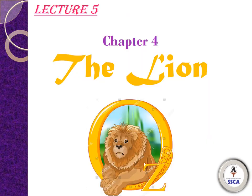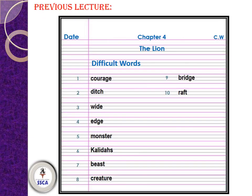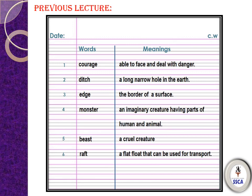Today is our lecture number five. In our previous lectures we have already completed reading and explanation of chapter number four, 'The Lion'. In our previous lecture we have done difficult words and words meaning of chapter number four. Today we are going to continue our written work — question answers and fill in the blanks. If any of you have not done difficult words and words meaning, make sure you complete those first before writing the question answers in your copy. Now let's move forward and start our today's work.